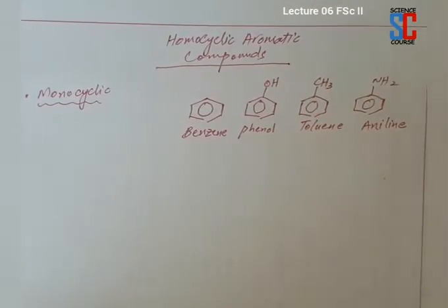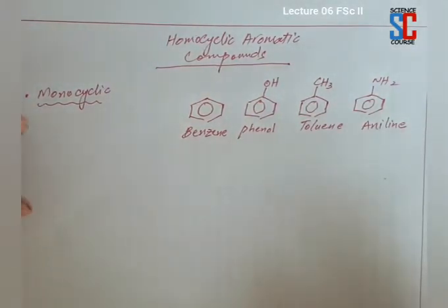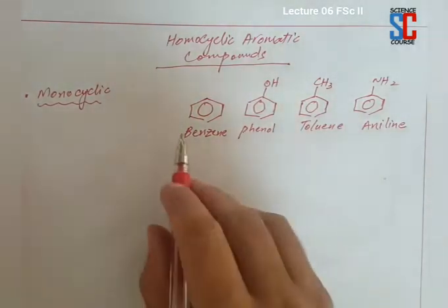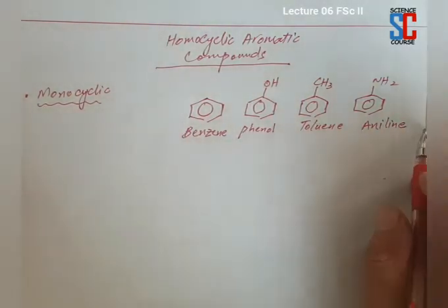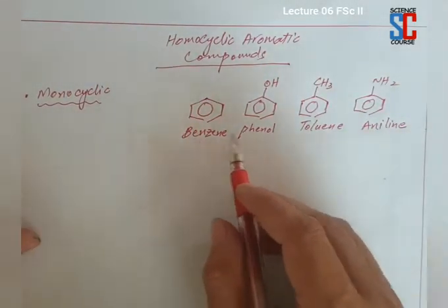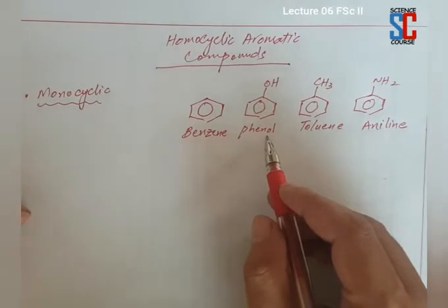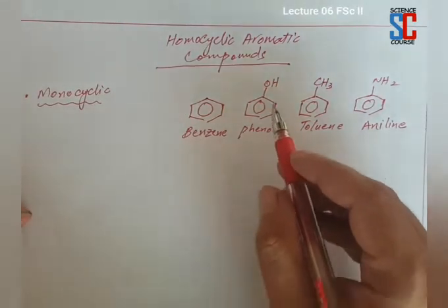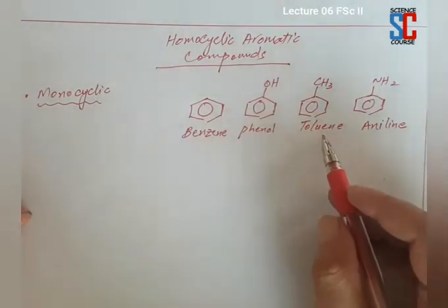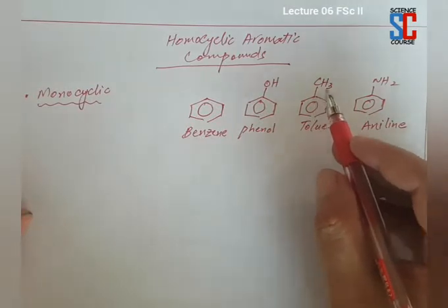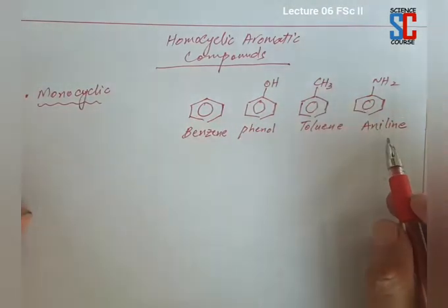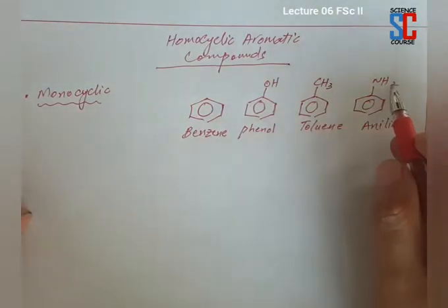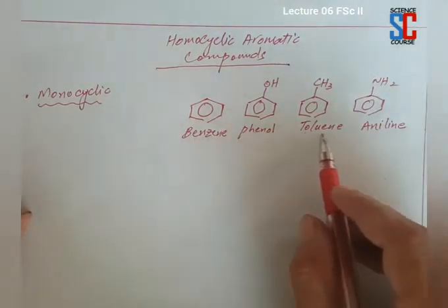Homocyclic aromatic compounds are further classified into two types: monocyclic and polycyclic. Monocyclic are those in which there is only one benzene ring — for example, benzene and phenol. Phenol is formed by replacing one hydrogen of benzene with an OH group. Toluene is formed by replacing one hydrogen with a methyl group. Aniline is formed by replacing one hydrogen with an amine group. These are monocyclic aromatic compounds.